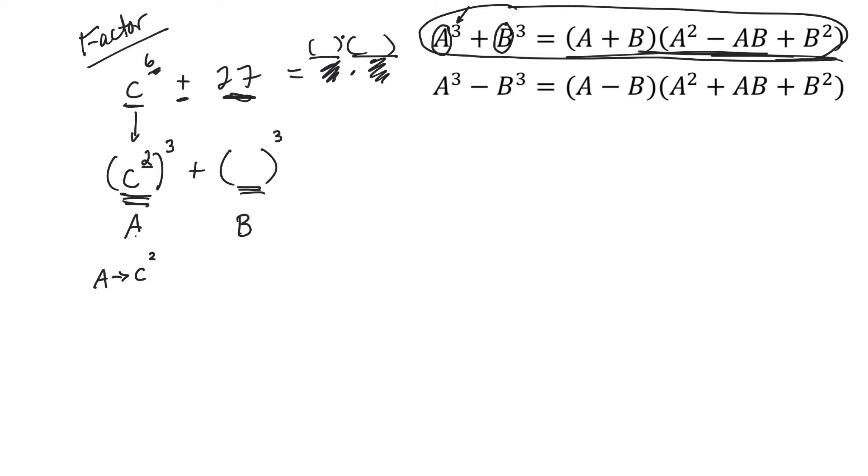Okay, now 27, you might have to do a bit of figuring on that one. So something cubed gives you 27. Let's try a couple. Like 2 cubed would be 2 times 2 times 2, which is not 27. Now how about 3? So 3 cubed would be 3 times 3 times 3.